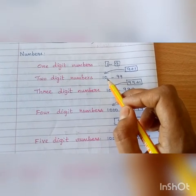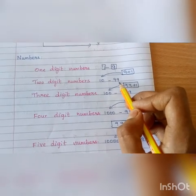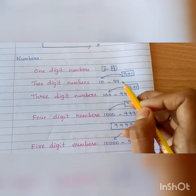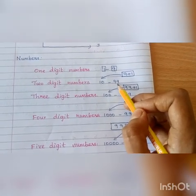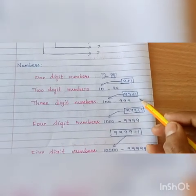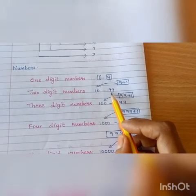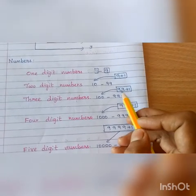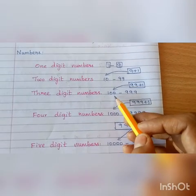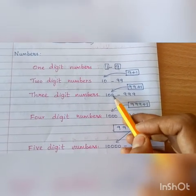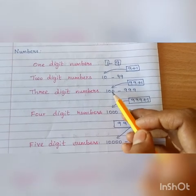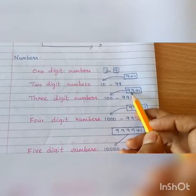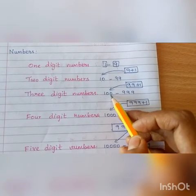We know that 2-digit numbers go from 10 to 99. So, 10 is the smallest 2-digit number and 99 is the greatest 2-digit number. Now, I am going to add 1 to the largest 2-digit number. So, 99 plus 1 is 100. How many digits are here? 3 digits — 1, 2, 3. So, 3-digit number.